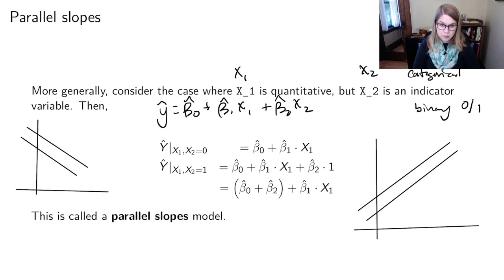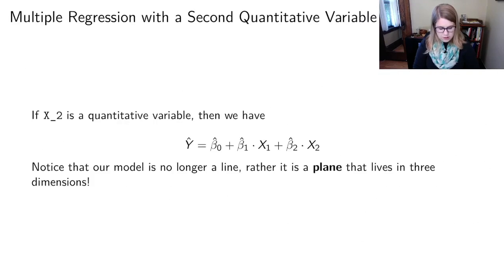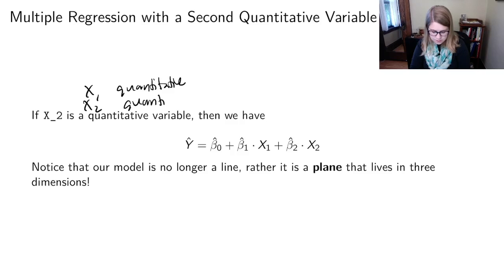That was the one that we started previewing last week. But we could also have multiple regression with a second quantitative variable. So let's say that x1 is quantitative, but x2 is also quantitative. So now I don't have that nice way of plugging in just 0 or 1, because x1 and x2 both have sort of continuous possibilities.